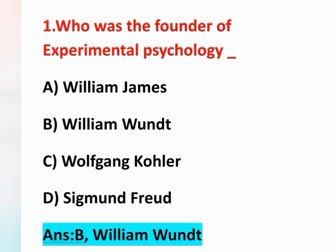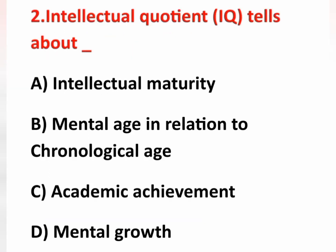The second question: Intellectual Quotient (IQ) tells about — option A intellectual maturity, option B mental age in relation to chronological age, option C academic achievement, option D mental growth.